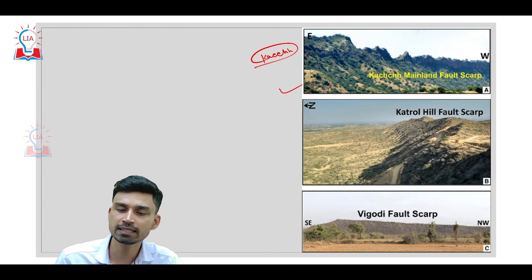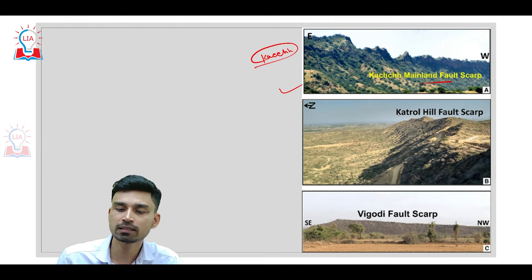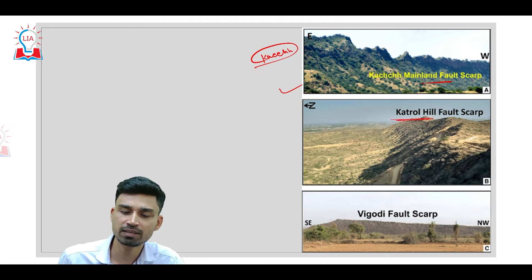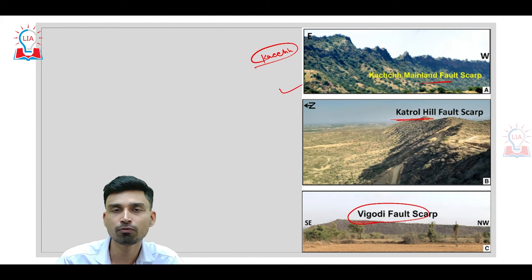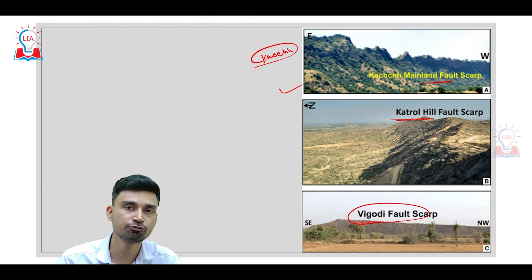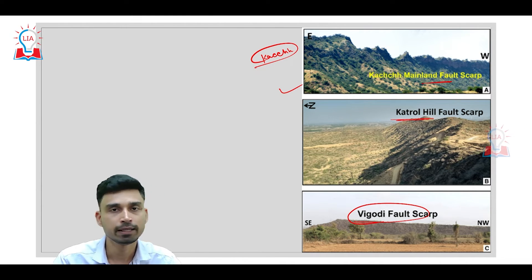The most notable fault scarps in the Kutch region of Gujarat are the Kutch Mainland fault scarp, the Cartrol Hill fault scarp, and the Vigodi fault scarps — three significant fault scarps resulting from tectonic movement in that region.